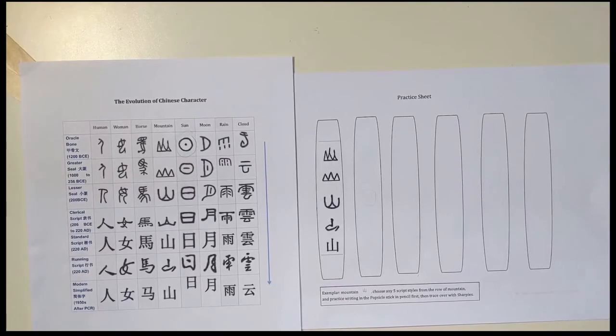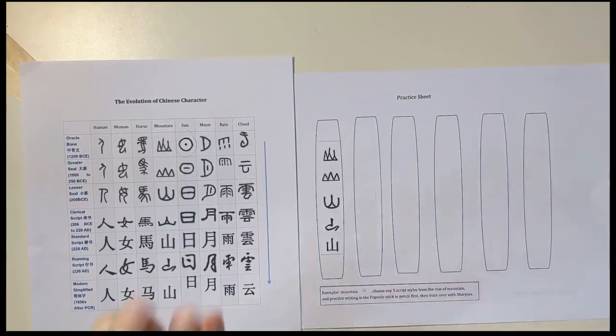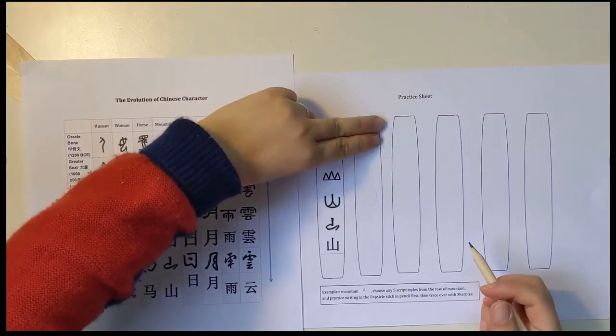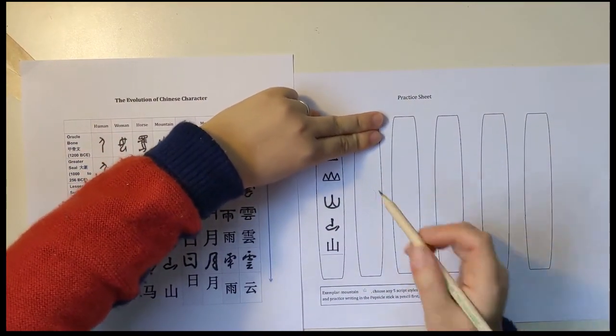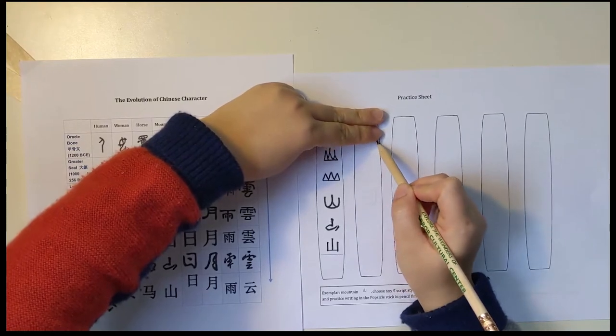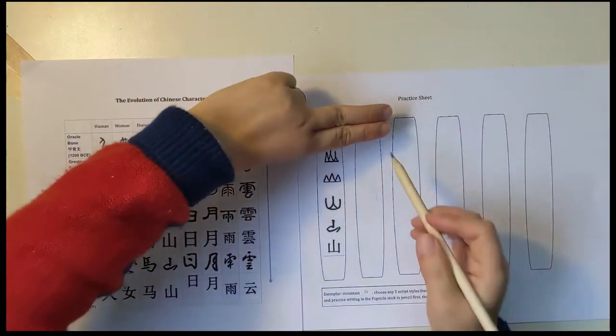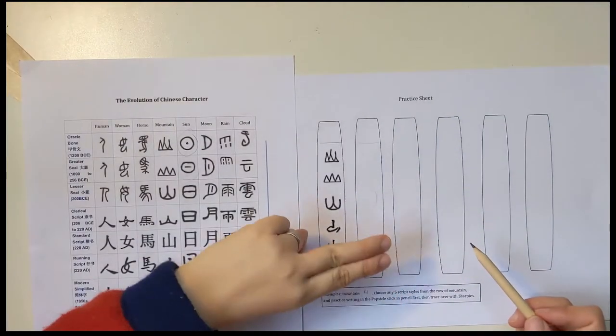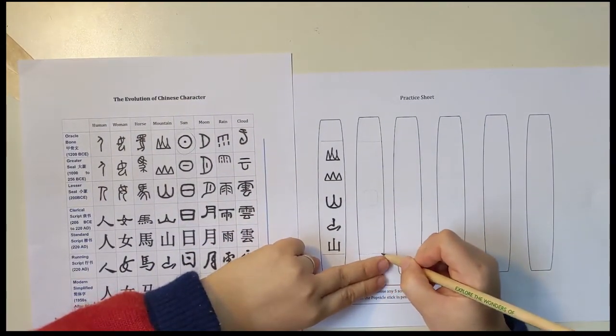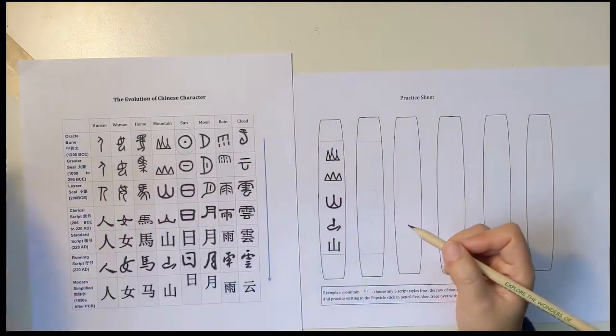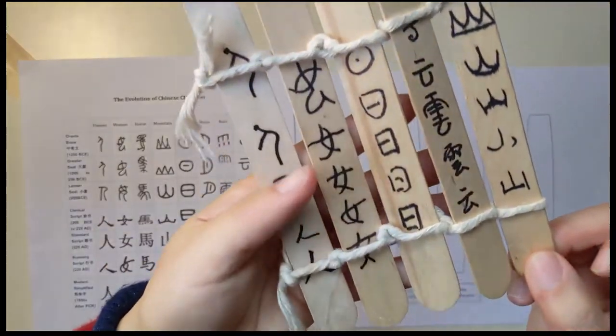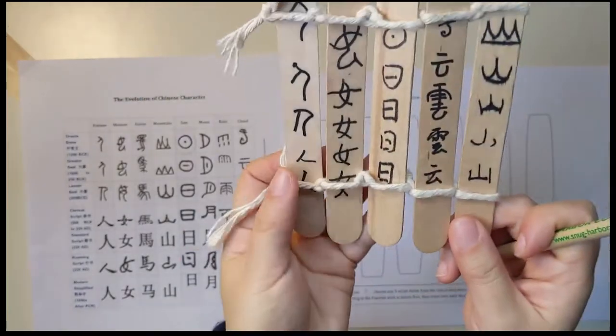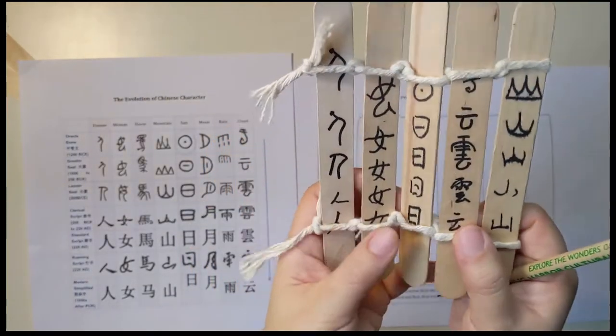On my practice sheet, I'm going to measure two fingers on the top of my tongue depressor and draw a line after my two fingers, and then I do the same thing for the bottom. This is because we are going to tie the string afterwards; this is the place we are going to tie the strings.